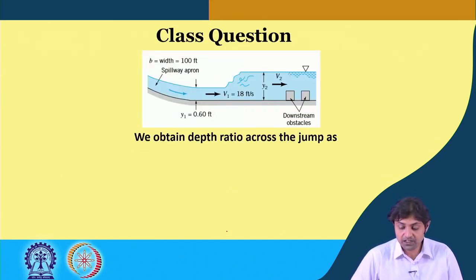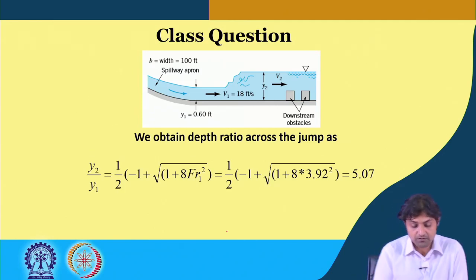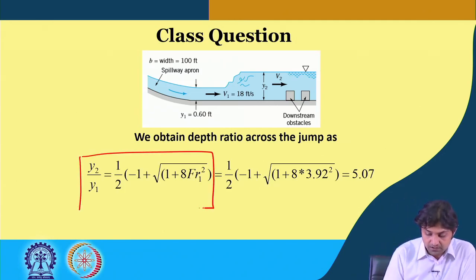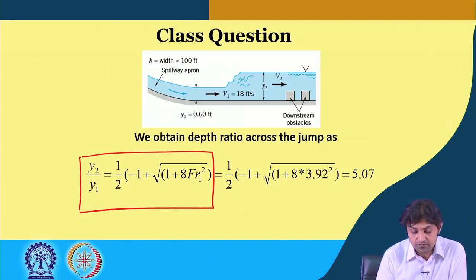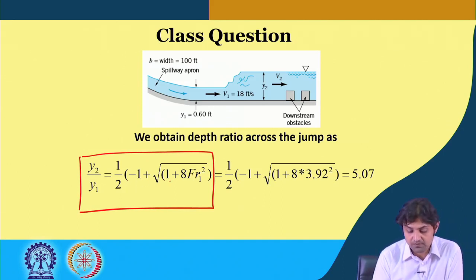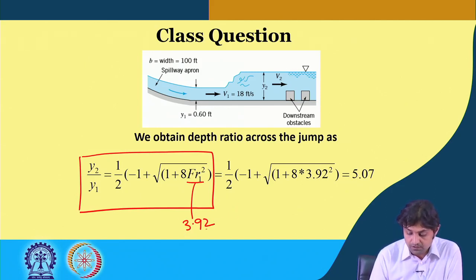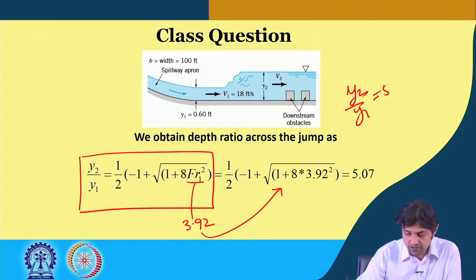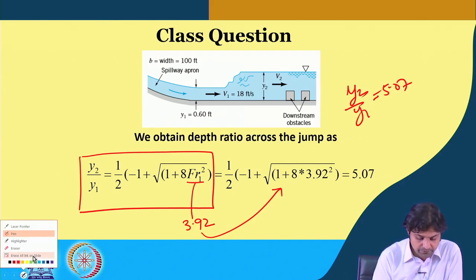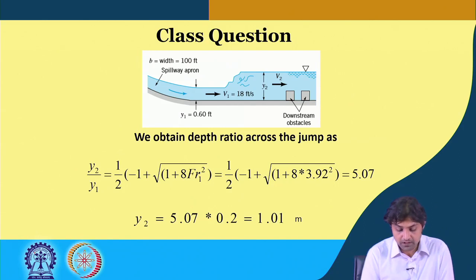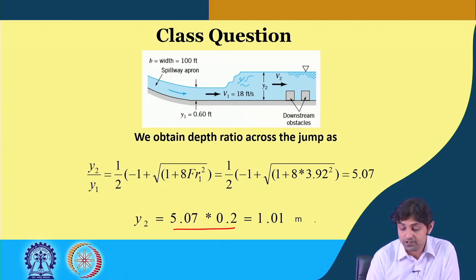In the second step, we obtain the depth ratio. We have the formula: y2/y1 = (1/2) × [−1 + √(1 + 8·Fr1²)]. Fr1 was found to be 3.92. Plugging in these values, y2/y1 comes out to be 5.07. Therefore, y2 = 5.07 × 0.2 = 1.01 meters.